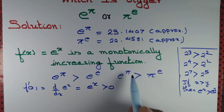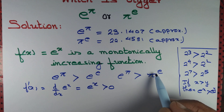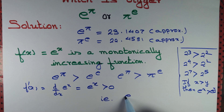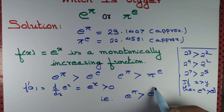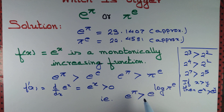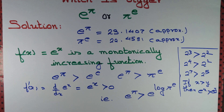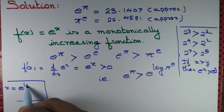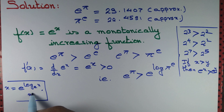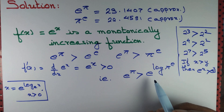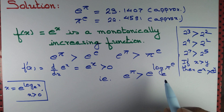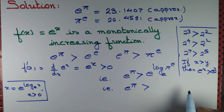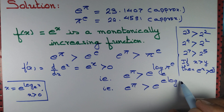Now we want to prove e to the power pi is greater than pi to the power e. Can we write pi to the power e in terms of powers of e? Yes. We use the identity x = e to the power log x (for x > 0), so pi to the power e equals e to the power (log of pi to the power e), which equals e to the power (e times log pi). So we need to prove e to the power pi is greater than e to the power (e times log pi).